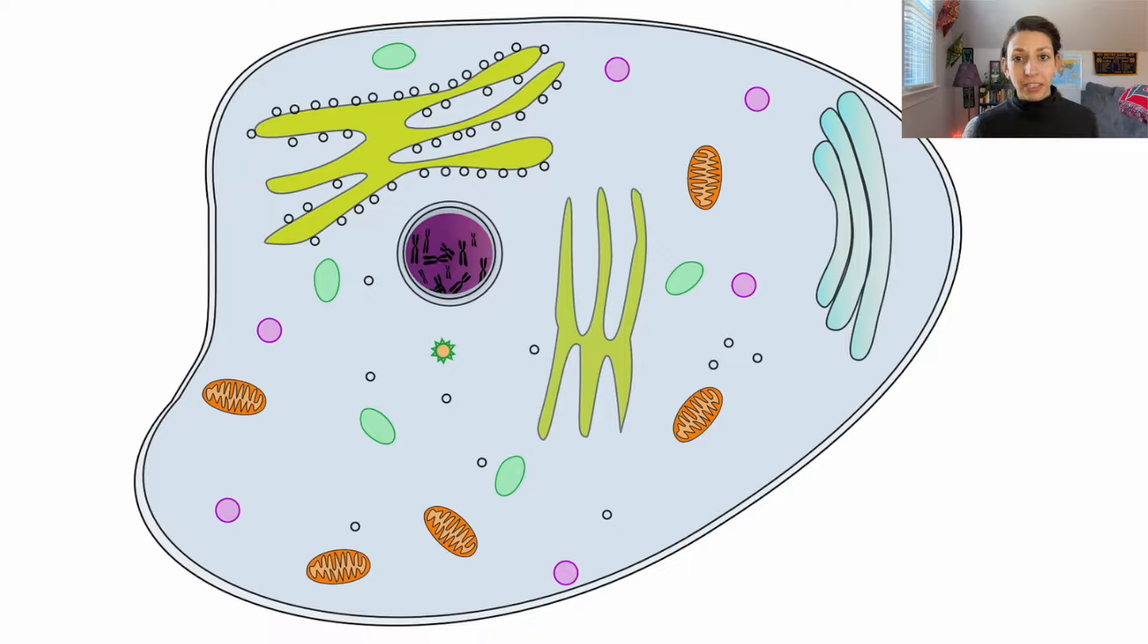Different cells will have different organelles depending on the functions that they serve. Prokaryotic organisms are going to have different organelles than eukaryotic organisms. Remember prokaryotes are organisms that lack a nucleus and membrane-bound organelles, so they're going to be relatively simple compared to our eukaryotic organisms. They're going to be pretty small and in general they will have fewer components.